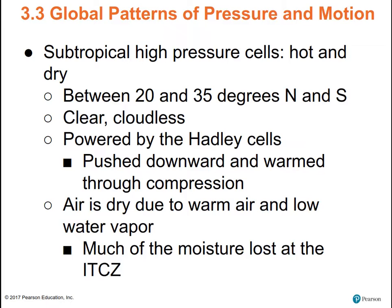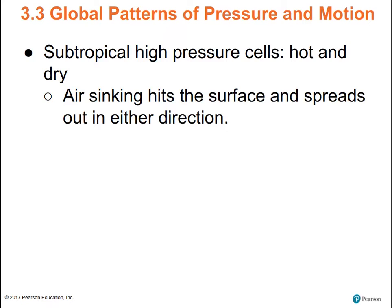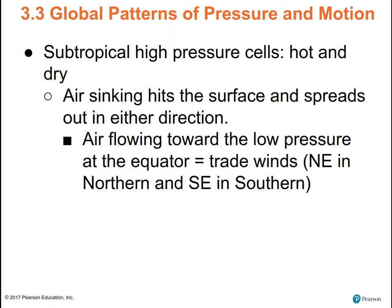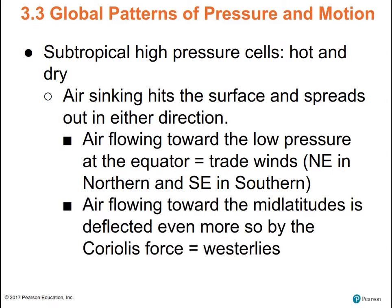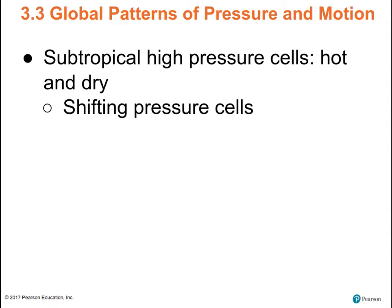Much of the moisture is lost at the ITCZ. As the air sinks, it hits the surface and spreads out. The wind flowing from the subtropical high back to the ITCZ makes the trade winds; the air flowing towards the mid-latitudes makes the westerlies. So two of the wind belts — the trade winds and the westerlies — are both created by the subtropical high. The subtropical high pressure cells shift north and south, so some places are drier when the subtropical high is more dominant, while other places have rain most of the year except when the subtropical high is overhead.